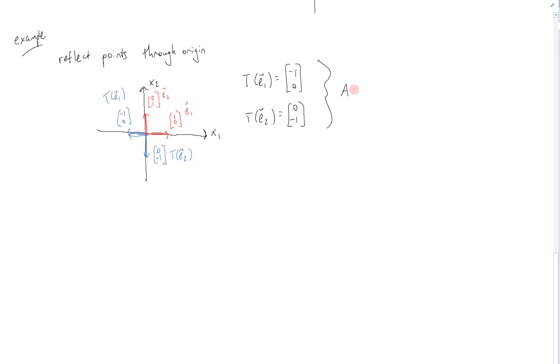And so just as before, our transformation matrix is obtained by putting these together. And we get [-1,0; 0,-1].